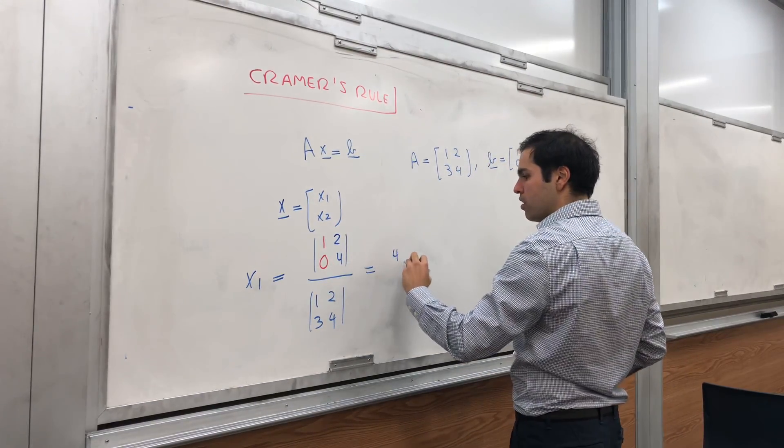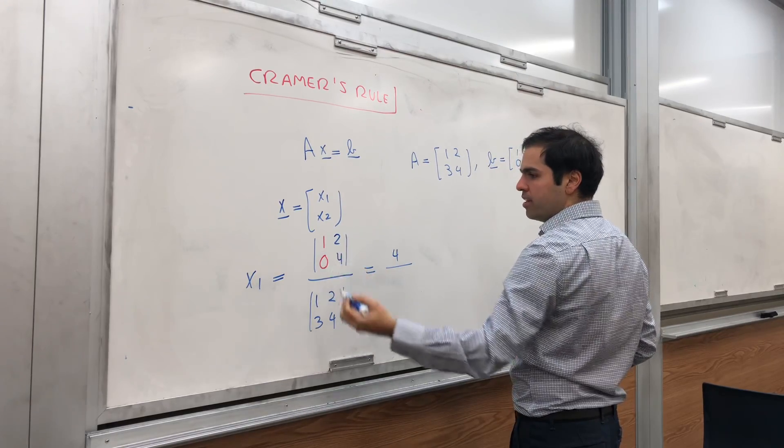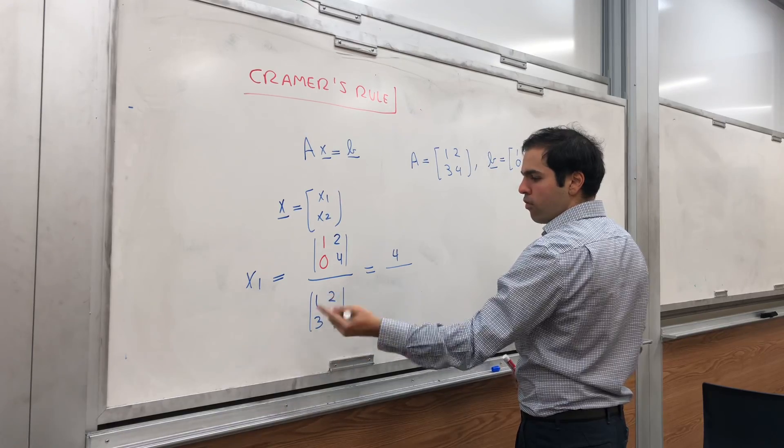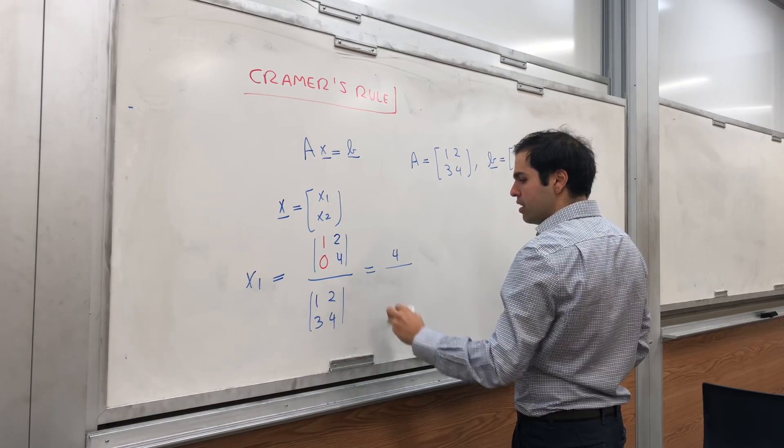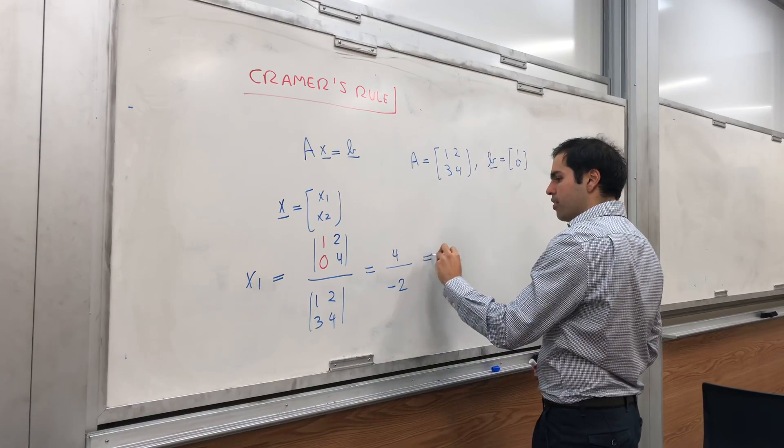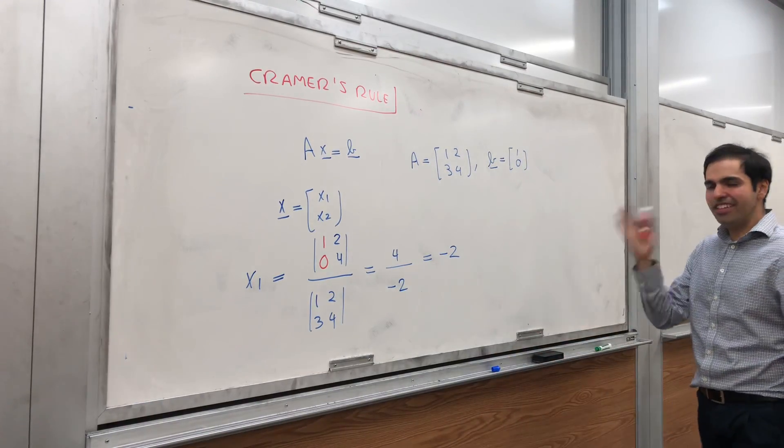So you get 4—the determinant is 1 times 4 minus 0 times 2. And the denominator is 1 times 4 minus 2 times 3, so it becomes minus 2, and that becomes minus 2. So you see it exactly gives you x1.